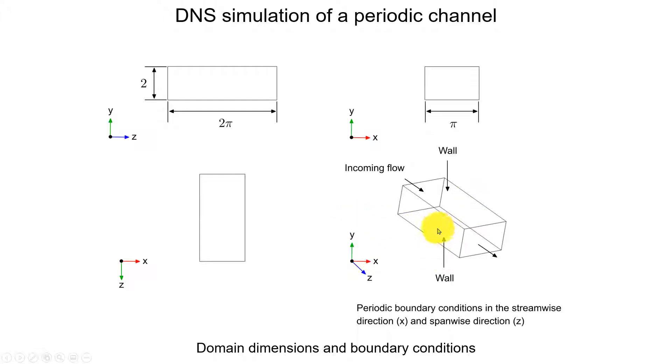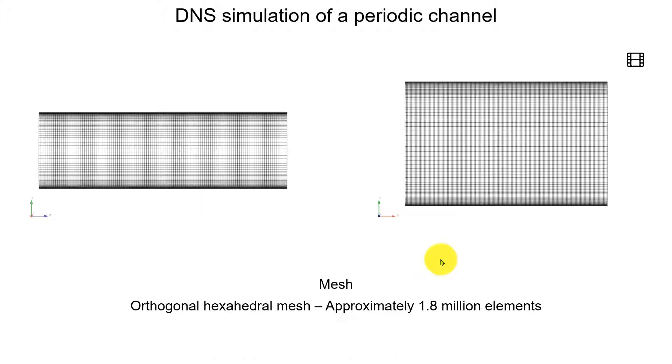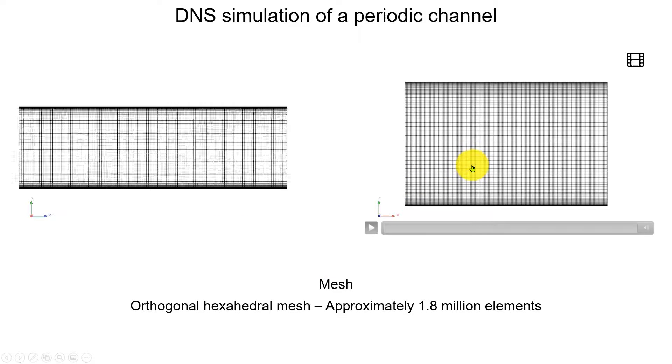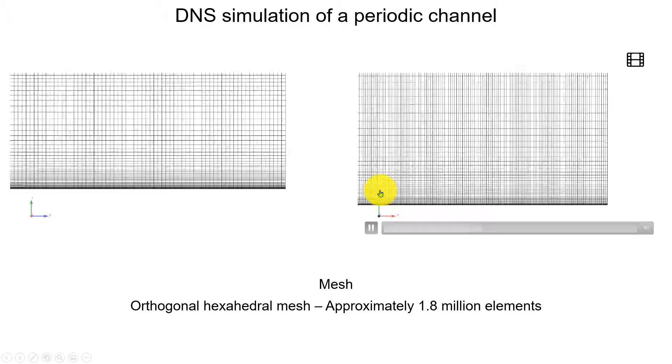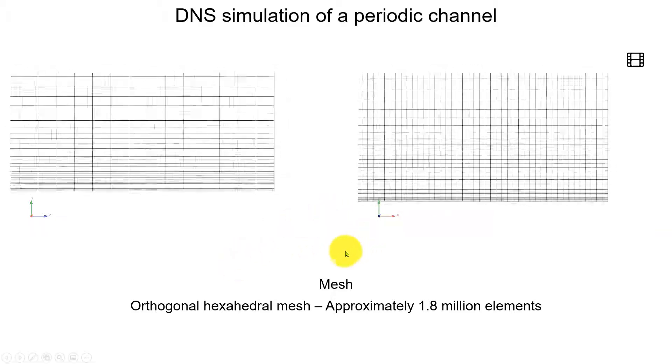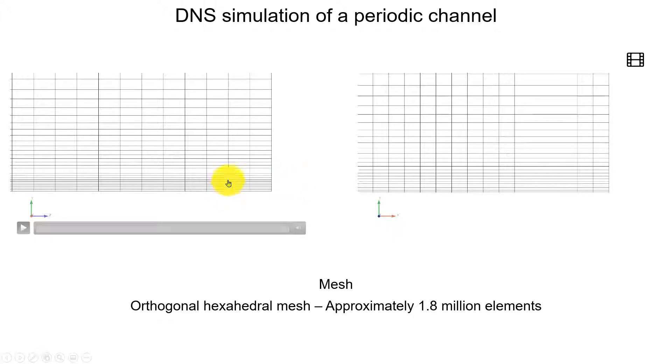Periodic means that what is going out here is entering here. This is to simulate infinite domains. The problem in DNS simulation is we're resolving all the scales of space and time. We need to do very small domains. Solving complete configurations of airplane, cars, buildings is out of the way with computational resources available today. Later in the theory, we're going to see some values, some questions called y plus, how we compute that, but see that here we're resolving the boundary layer.